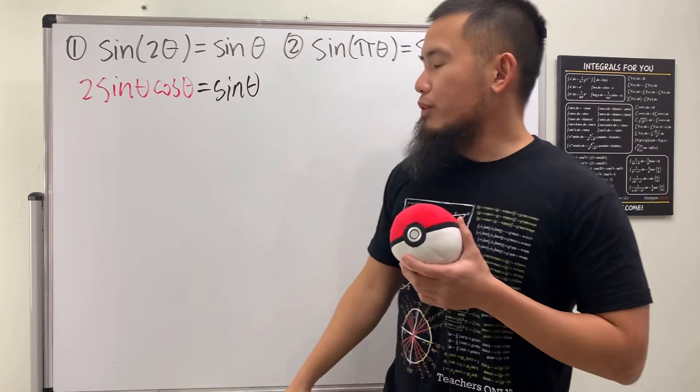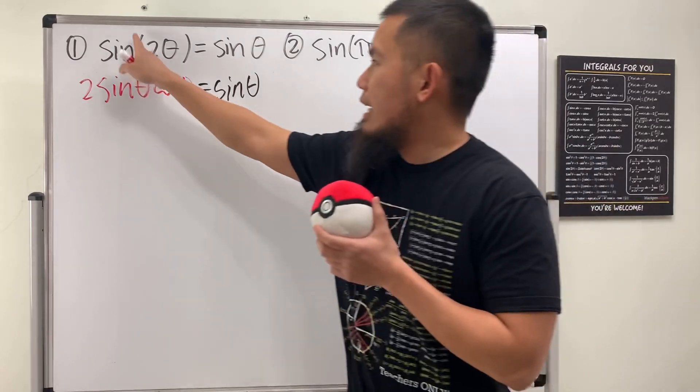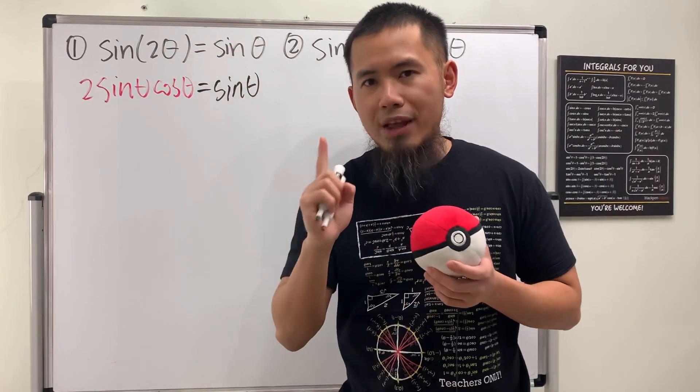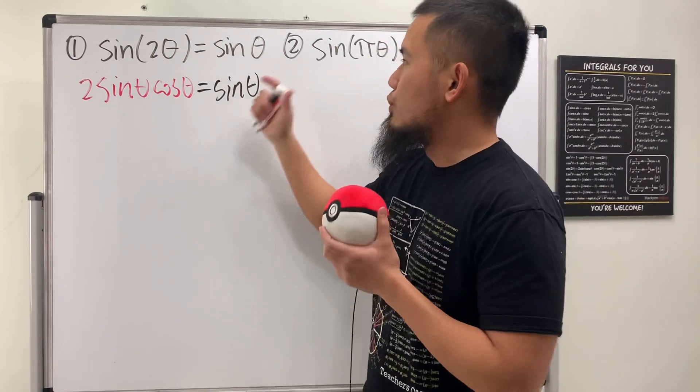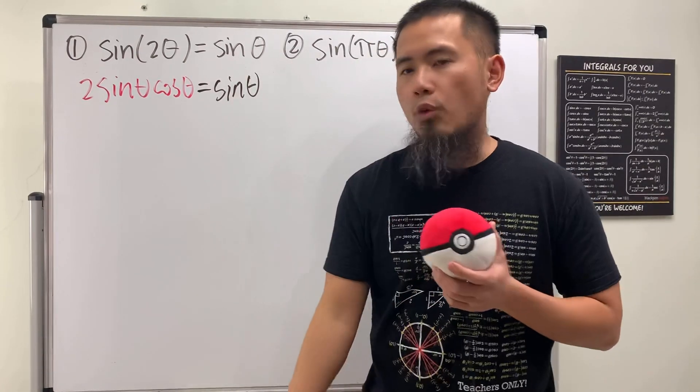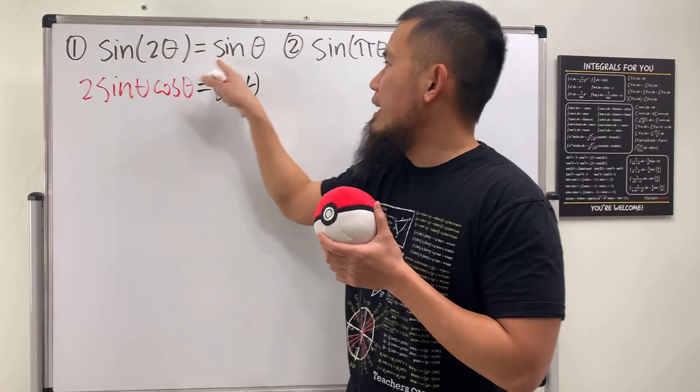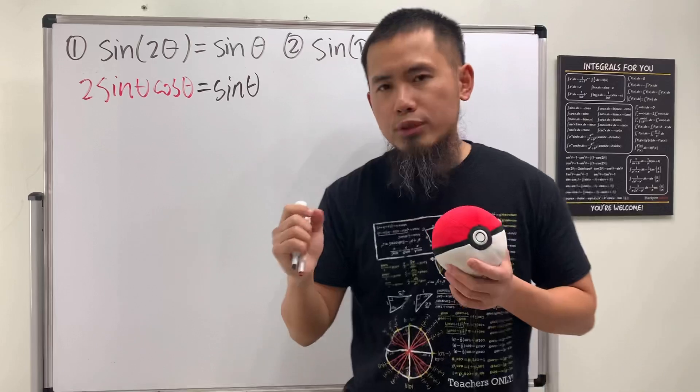And the reason we have to do that is because, well, first of all, we cannot just cancel out the sine. Otherwise, you only get one value for theta. The truth is, we have infinitely many solutions for these two equations. And the problem here is that we have sine of 2 theta, and this is sine theta. The inputs are different.